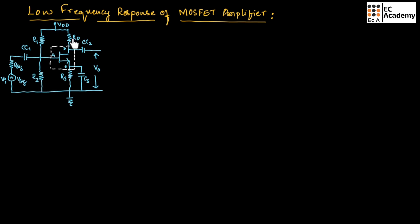Here RD is the drain resistor which is the output resistor, RS is the source resistor, R1 and R2 are the voltage divider bias resistors, CC1 and CC2 are the coupling capacitors, and CS is the bypass capacitor. The input is Vi, which is the signal connected to the gate through the resistor R-signal, and the output is measured across the drain terminal.